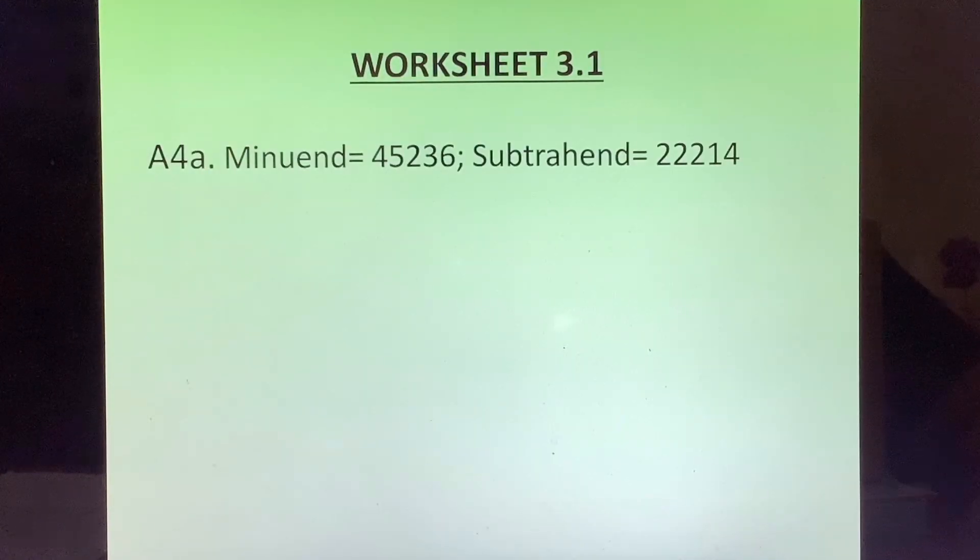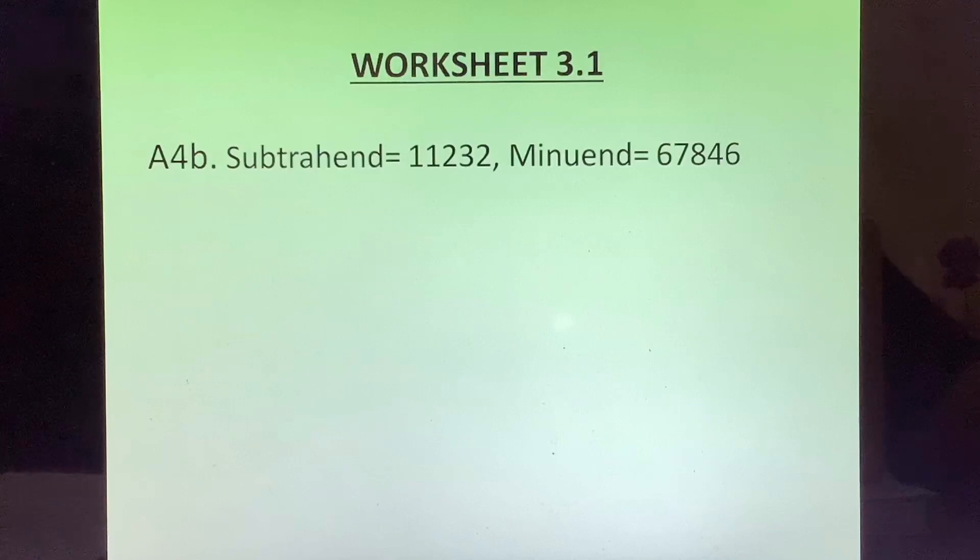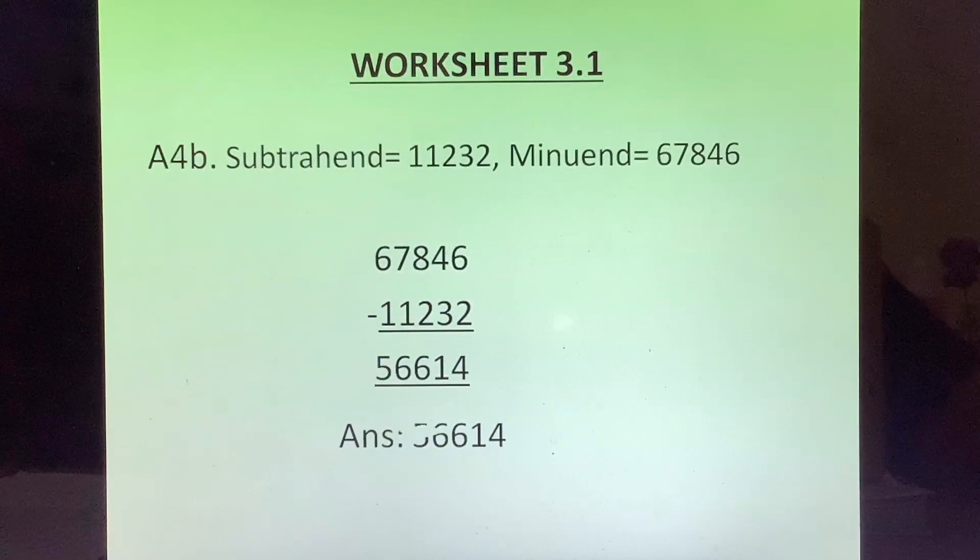Now fourth answer: Minuend and subtrahend were given. Minuend will come on top and subtrahend will come below it, so we write the numbers one below the other. And when we subtract we get the answer as 23022. B part: Subtrahend 11232 and minuend 67846. Minuend comes on top. Now students, a small trick here: you can subtract from a bigger number only, so you will always write the bigger number on top and the smaller number below it when you are subtracting. So when we write them one below the other we get the answer as 56614.